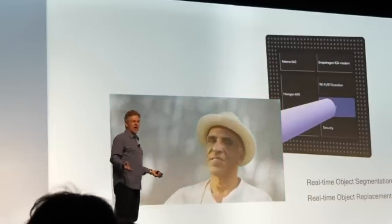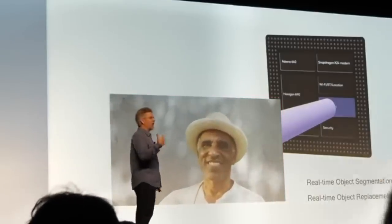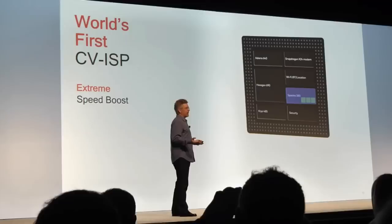You can change the background, focus on the subject, identify a mask, and remove the background. If you have a 855 processor or the Kirin 980, you can get these video features. This is important — implementing all of this requires a lot of processing power from the manufacturer and the camera.